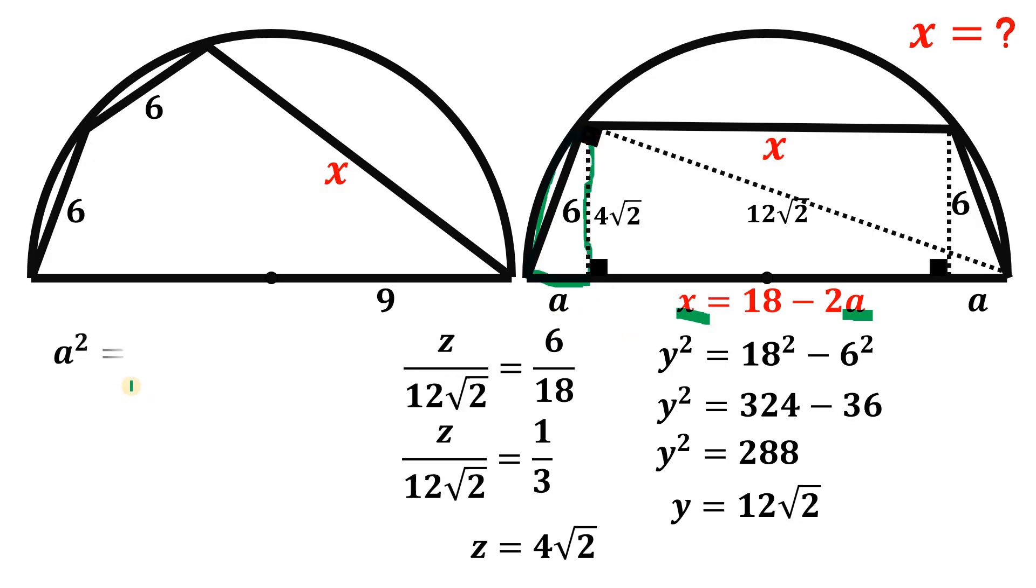And now using this right triangle right over here, we can now solve for the value of a. So using Pythagorean theorem, we have 6 squared: a squared equals 6 squared minus 4 times square root of 2 raised to the power of 2. Simplify this: we have 36 minus 32, which is 4, and square root of 4 is simply equal to 2.